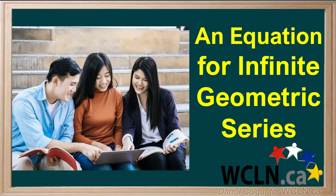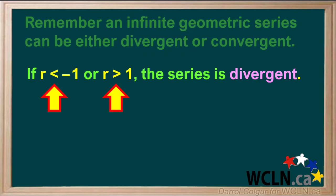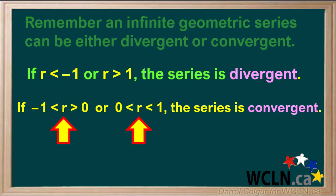An infinite geometric series is the sum of an infinite number of terms of a geometric series. It would be great if we had an equation we could use to calculate it. An infinite geometric series can either be divergent or convergent. If r is less than negative 1 or greater than positive 1, the series is divergent. But if r is between negative 1 and 0, or between 0 and positive 1, the series is convergent.